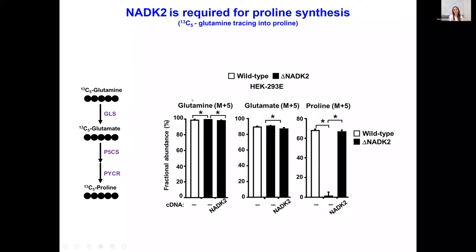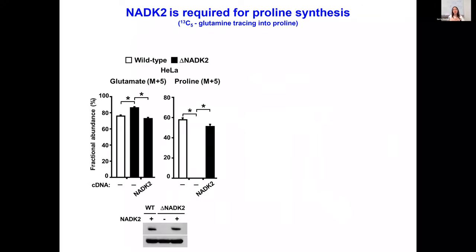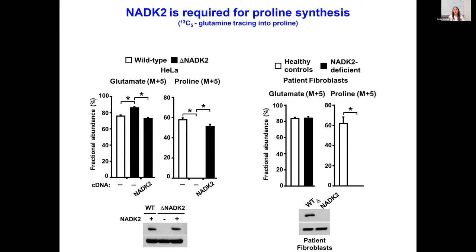We observed that the levels of glutamine and glutamate are marginally affected, and our data suggests NADK2 is essential and required for proline synthesis. We reproduced this data in many different cell systems with always the same result — shown here in HeLa cells, where NADK2 knockout cells show no proline biosynthesis, restored by NADK2. Moreover, we were lucky to obtain patient fibroblasts that are NADK2-deficient, and in these patient fibroblasts we also see essentially no proline biosynthesis, confirming that NADK2 is absolutely required for proline synthesis.